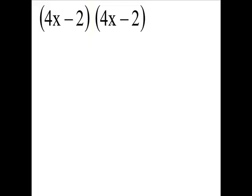4x minus 2 times 4x minus 2. We're going to treat this as a binomial. We're going to treat it like an entity. Just so you'll know this is one object here.